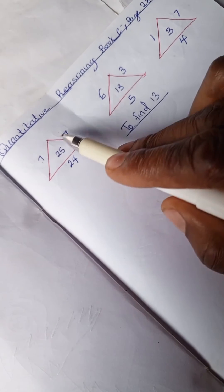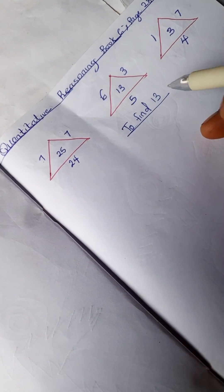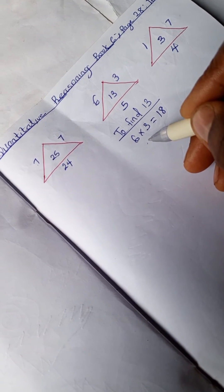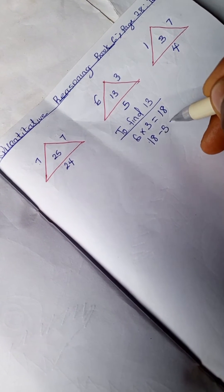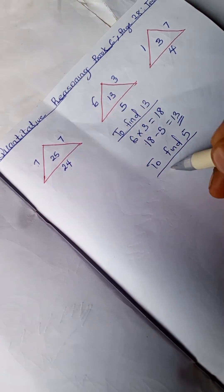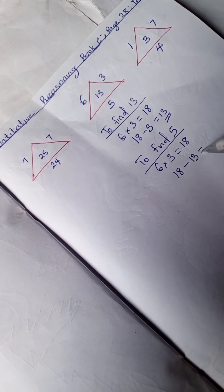Just like this: 7 plus 7 times 7 is 49, and 25 plus 24 is 49. So with the second set: 6 times 3 is 18, and 18 minus 5 is 13. To find 5: 6 times 3 is 18, and 18 minus 13 is 5.